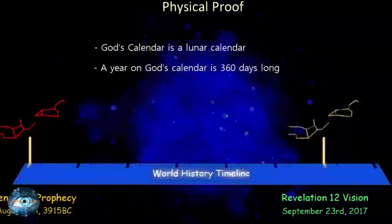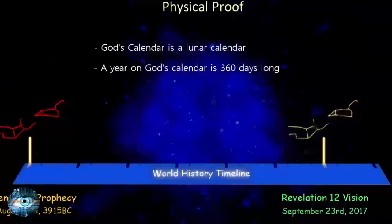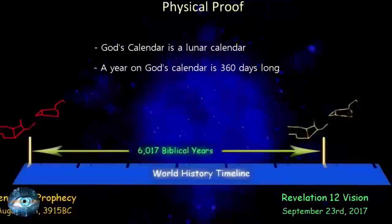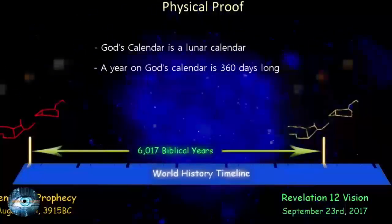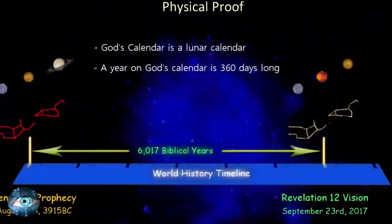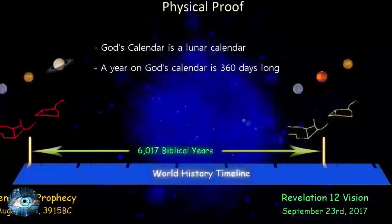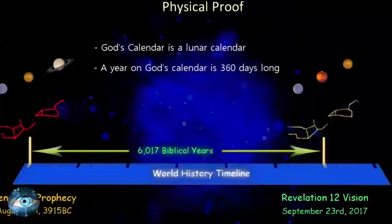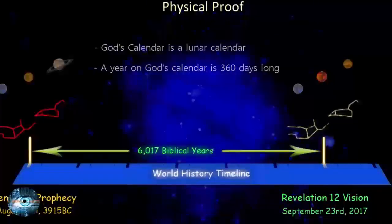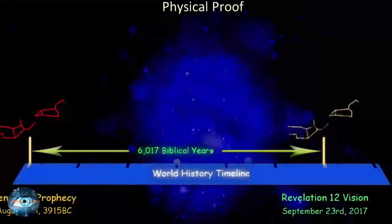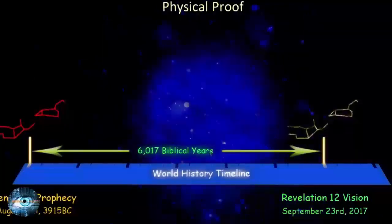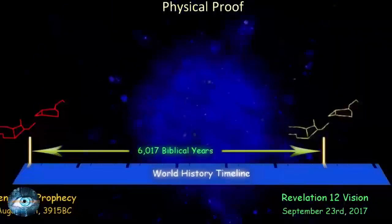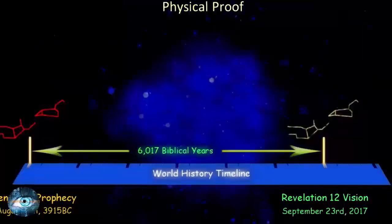There are then exactly 6017 biblical years between the prophecy given by God in Genesis 3 and the fulfillment of John's vision given in Revelation 12. The only difference between the two markers is the planets and their order that are added to the stars of the constellation Leo to make up the 12-star crown on the head of Virgo. We now have two points on this timeline that are approximately 6000 years apart, describing the time between the prophecy and the vision that Daniel was told to seal up, and marking two very important events in the history of man on earth.